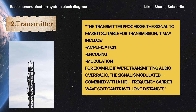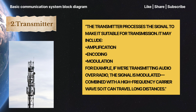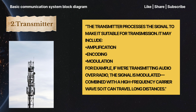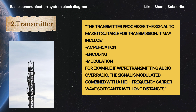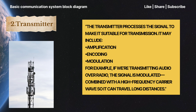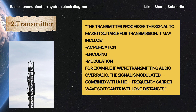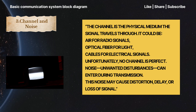Second, Transmitter. The transmitter processes the signal to make it suitable for transmission. It may include amplification, encoding, and modulation. For example, if we are transmitting audio over radio, the signal is modulated – combined with a high-frequency carrier wave – so it can travel long distances.